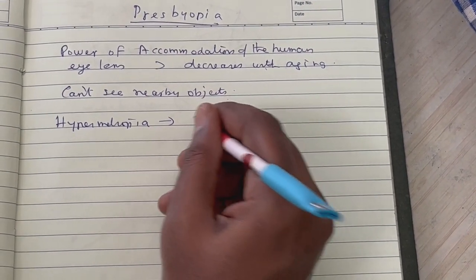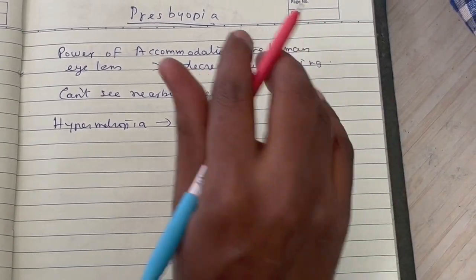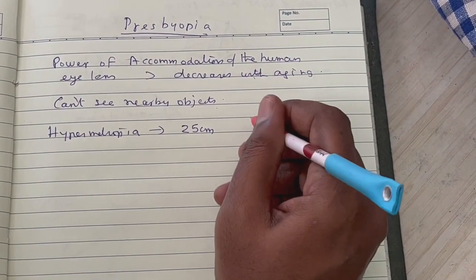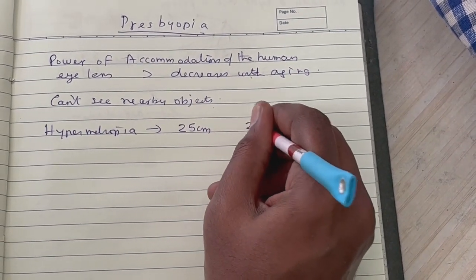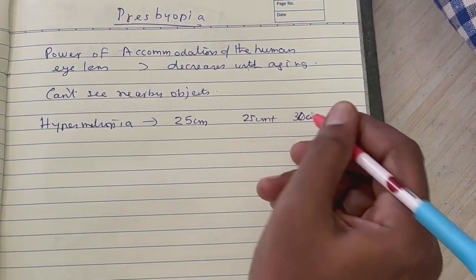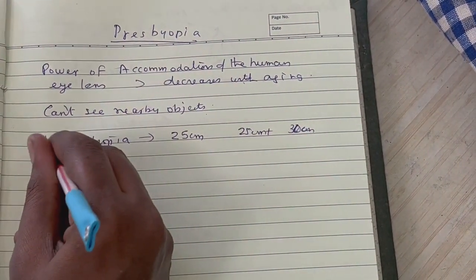So for hypermetropia, it would be something like 25 centimeters plus, which means it could be 30 centimeters something like that. So that's about hypermetropia, but the condition which we are discussing now, that is presbyopia.